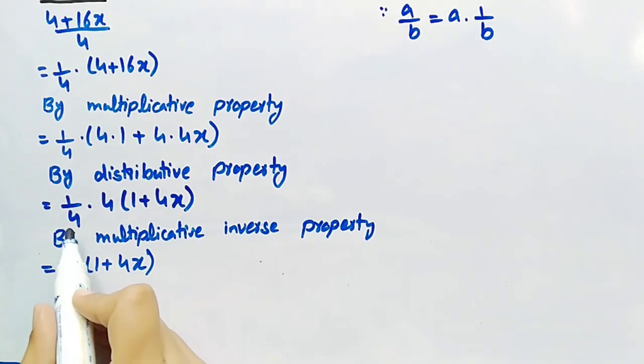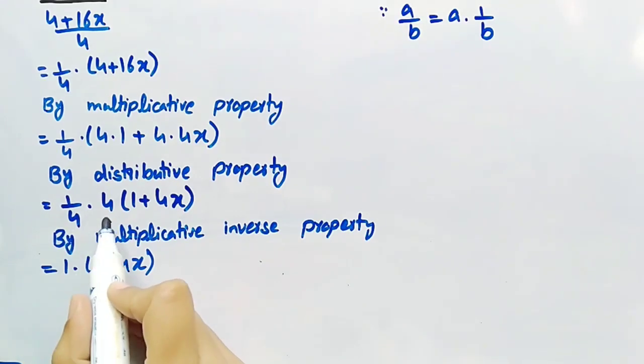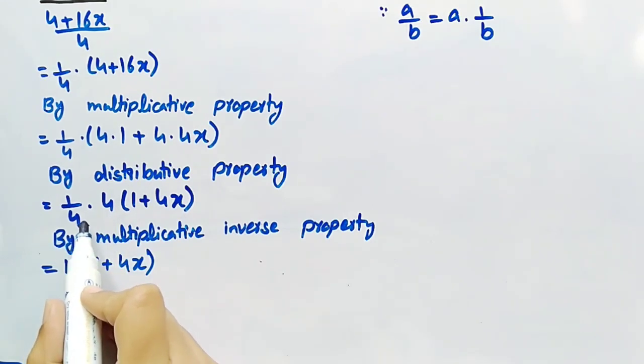Since 1 by 4 is multiplicative inverse of 4 and any number multiplied by its multiplicative inverse is equal to 1, that is why 1 by 4 multiplied by 4 is equal to 1.